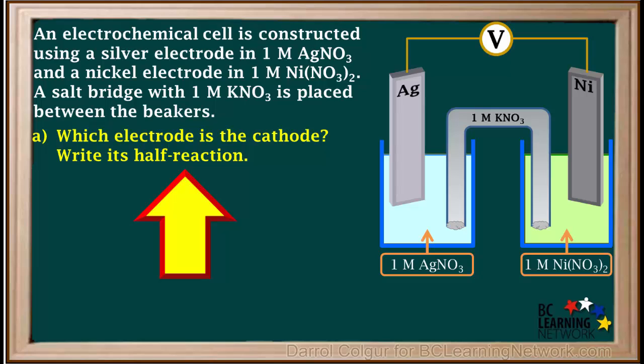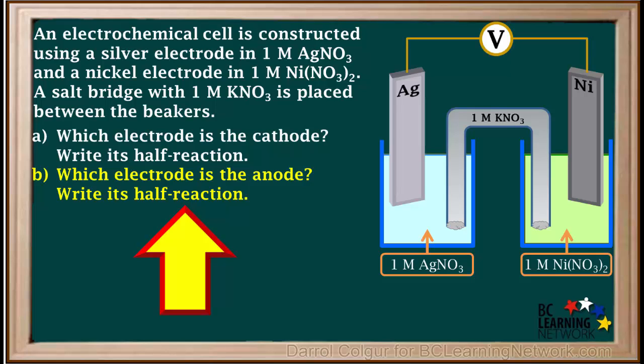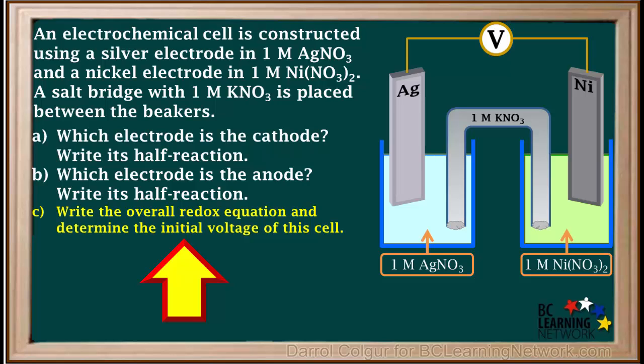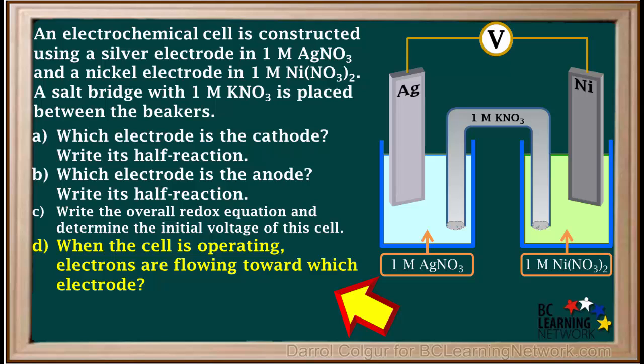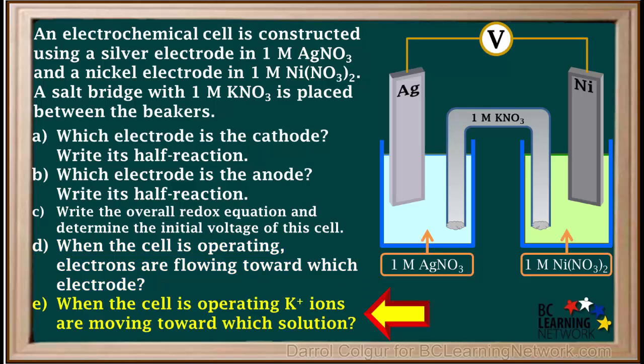We're asked which electrode is the cathode and told to write its half reaction. We're also asked to identify the anode and write its half reaction. Next, we're asked to write the overall redox equation and find the initial voltage of this cell. We're asked which electrode electrons are flowing toward while the cell is operating, and finally, which way potassium cations are moving in the salt bridge. We'll answer these questions one at a time.